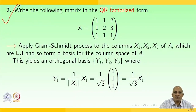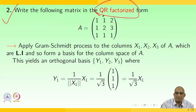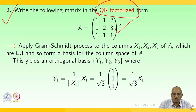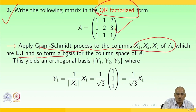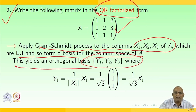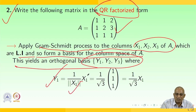We have the matrix A with first row [1, 1, 2], second row [1, 2, 3], third row [1, 1, 1]. Let us apply the Gram-Schmidt orthogonalization process for the columns x₁, x₂, x₃ of A, which are linearly independent and form a basis for the column space of A. We need to find an orthogonal basis y₁, y₂, y₃. So y₁ = x₁ / ‖x₁‖, and ‖x₁‖ = √(1² + 1² + 1²) = √3, giving y₁ = (1/√3)[1, 1, 1].